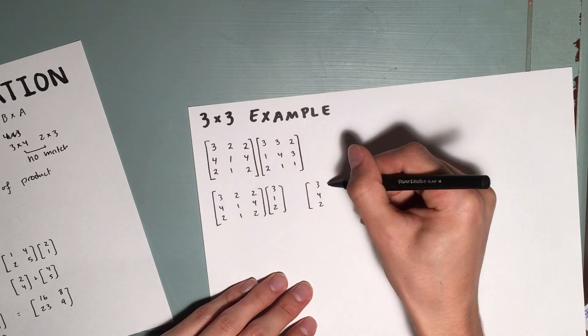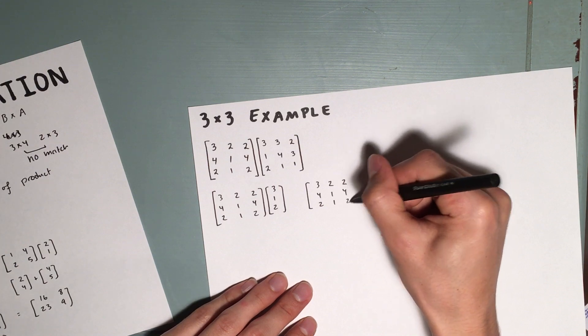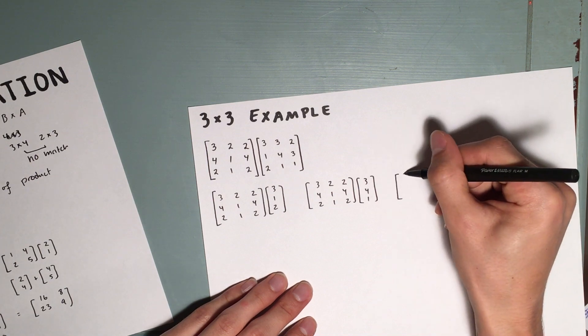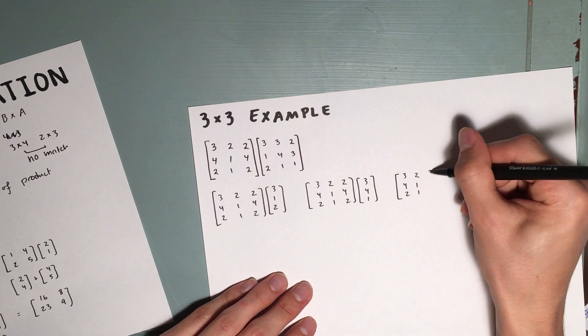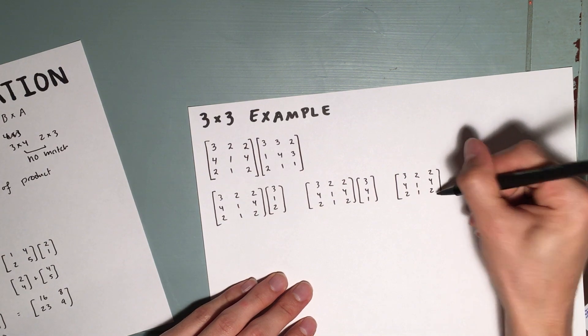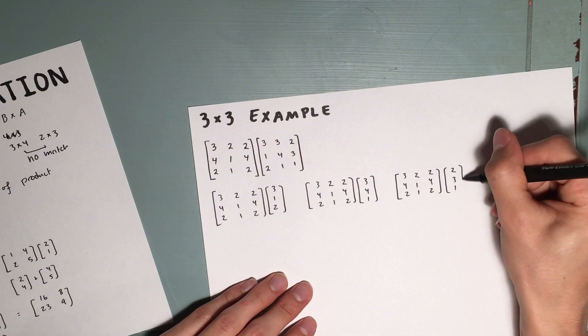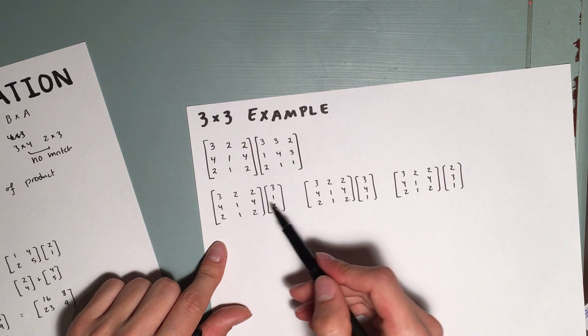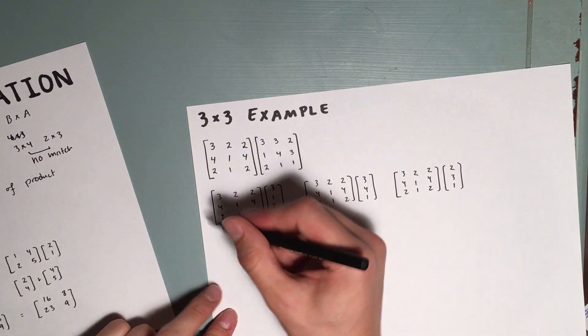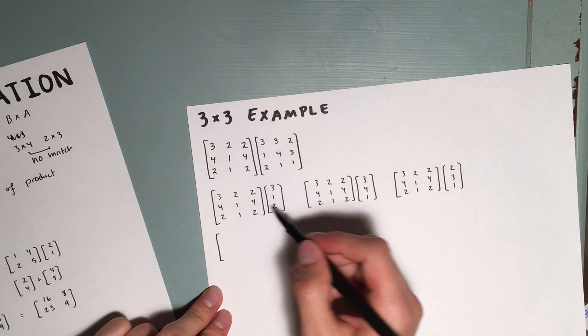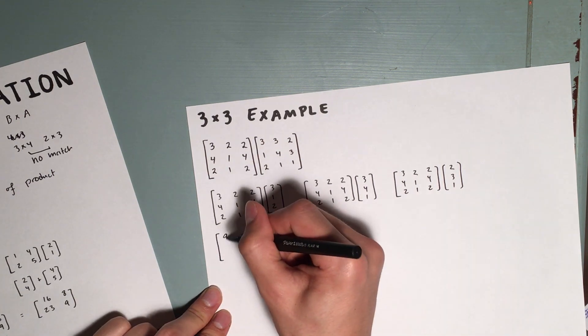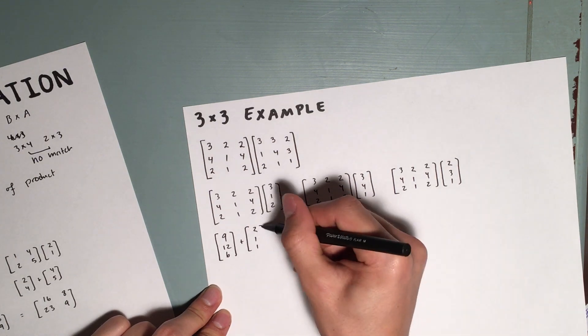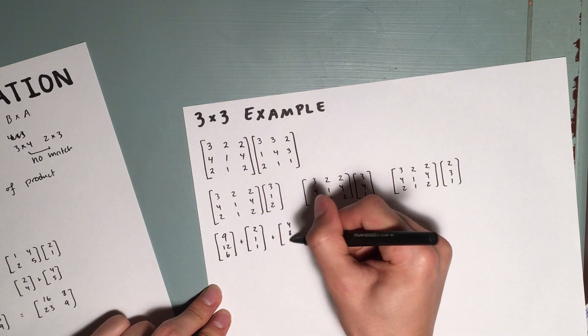3, 4, 2. 3, 4, 1. Now, again, we're going to distribute this first number to the first column, the second number to the second column, and the third number to the third column. We're going to do that all three times. And then we're going to add the individual steps. So this gives us 9, 12, 6, plus 2, 1, 1, plus 4, 8, 4.